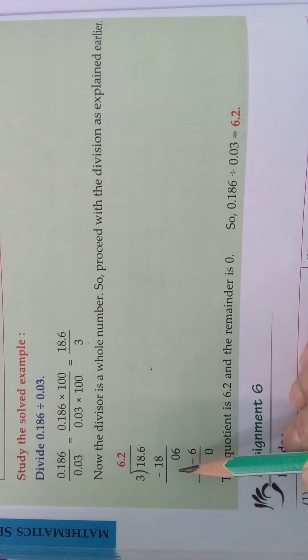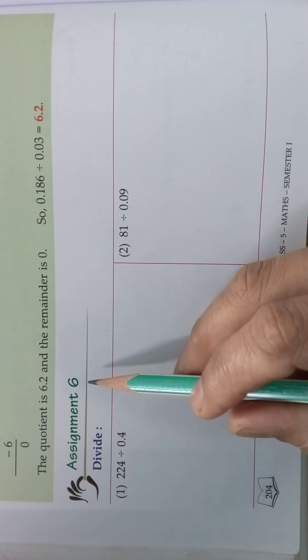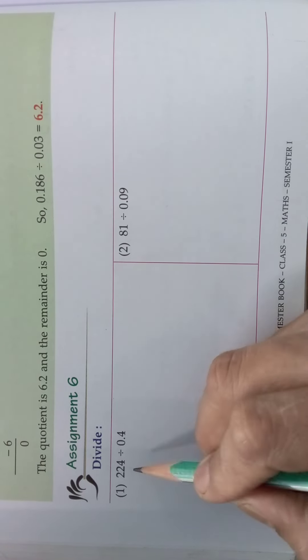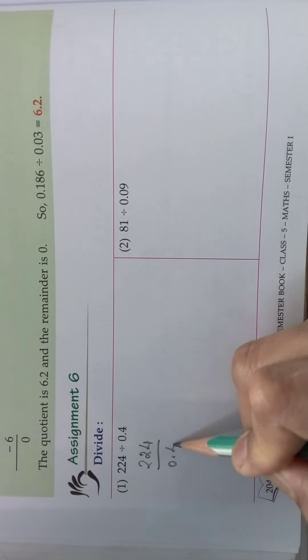Children, come we will do the example sum, an assignment sum. Then it will be easy for you. Assignment 6, divide. For sum, 224 divided by 0.4. So what is the number? 224 by 0.4.